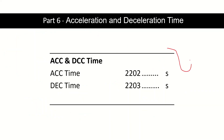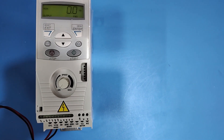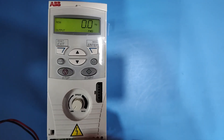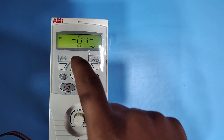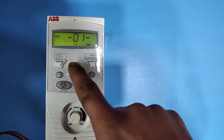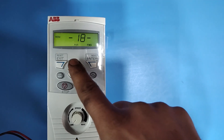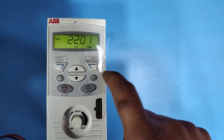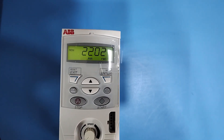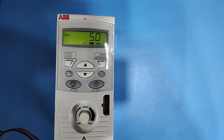The next part covers acceleration and deceleration time. Parameter 2202 is for acceleration time and parameter 2203 is for deceleration time. To change these, press Enter once, press the down button and go to PARL, press Enter once. Group 01 will show. Navigate to group 22 by pressing the up key. Press Enter once. Go to parameter 2202 — acceleration time. Press Enter two times.